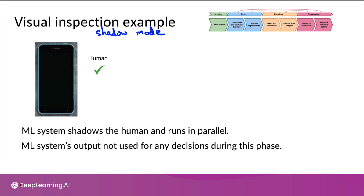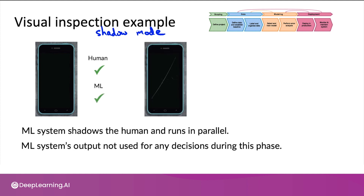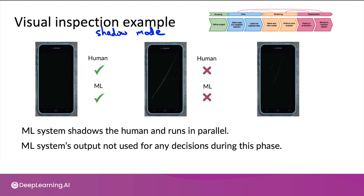For example, if the human says a phone is fine with no defect and the learning algorithm agrees, that's fine. If there's a big scratch and the person says it's not okay and the algorithm agrees, good. But maybe for a smaller scratch, the person says not okay while the learning algorithm makes a mistake and thinks it's fine. The purpose of shadow mode deployment is to gather data on how the learning algorithm performs compared to human judgments — by sampling outputs, you can verify accuracy and decide whether to allow the algorithm to make real decisions in the future.